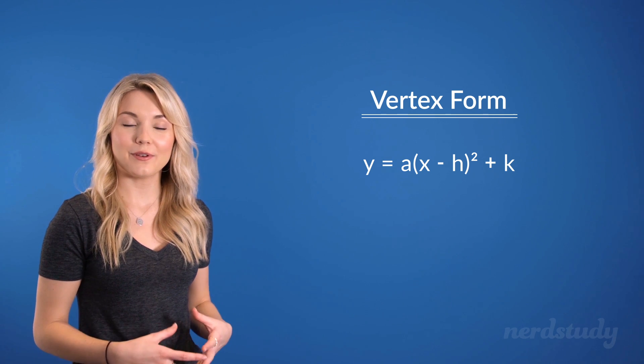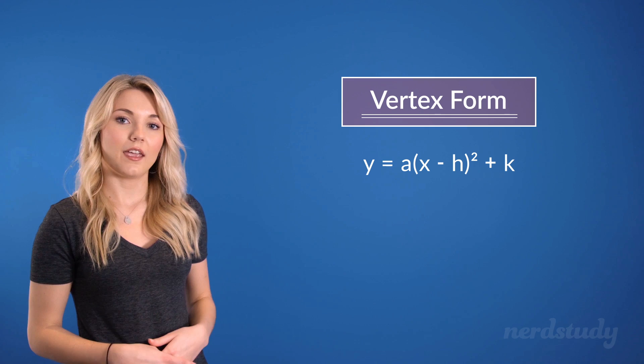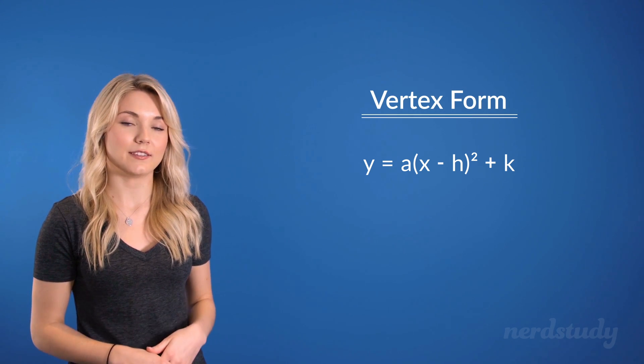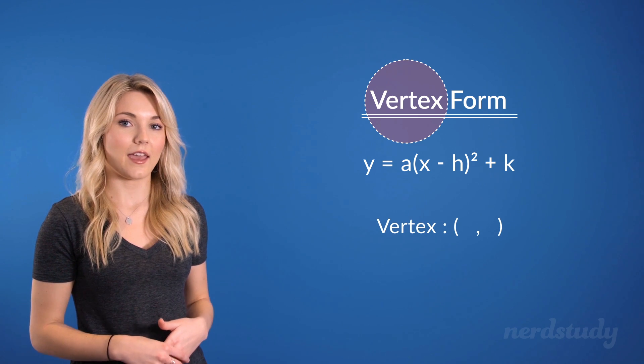Alright, the beauty of the vertex form is already hinted to us through its name. In this form, it is especially easy for us to identify the vertex. The vertex is simply h, k.